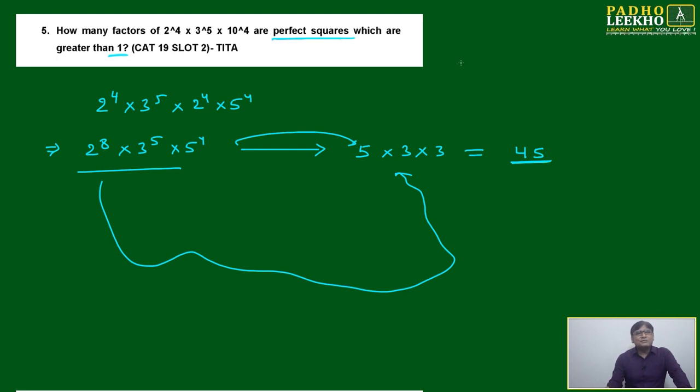Because we know to make a perfect square, the power must be even. Then how many options you have? 2 to the power 0 to 2 to the power 8. How many options you have? No need to again count. If you are counting everything then again problem. You have 5 options only.